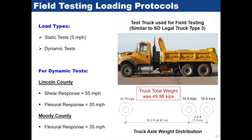We used a dump truck loaded to 50 kips and performed both static and dynamic tests. Static tests used a truck speed of five miles per hour. Dynamic tests were initially planned at 55 mph, but because of local road conditions and crew safety, we reduced the speed to 35 mph. The girder depths were 23 inches and 30 inches, which are typical for double T bridges in South Dakota.